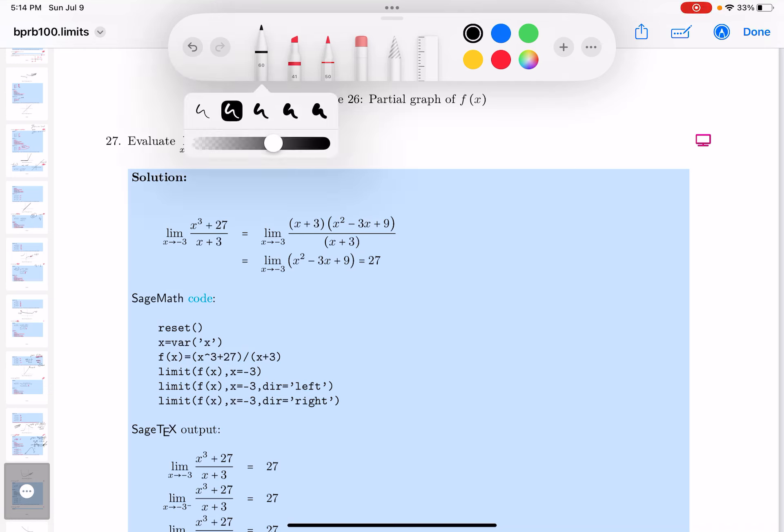Okay, if this was a pre-calculus class and I said, you know, teacher asked you to graph f(x) = (x³ + 27)/(x + 3), I'd probably write the domain down first. It's all the real numbers, but x cannot be equal to -3.